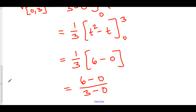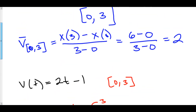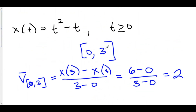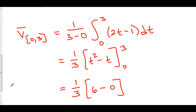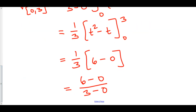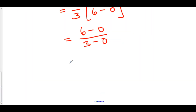Look familiar? It should, because that is exactly what we did to position when we took the slope of position from zero to three to find the average rate of change of position. And lo and behold, once again, by using the average function value of velocity, we come to the exact same place — our average velocity is two.